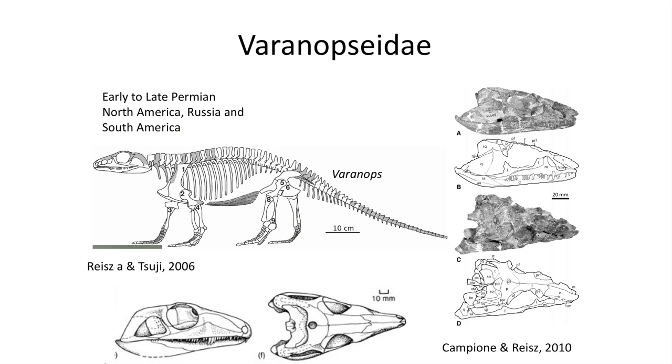Easy-to-digest fruits had yet to evolve during the Permian. The next group are the Varanopidae, which lived during the early and middle Permian period. They are found in North America, Russia, and South America, and feature narrower skulls and numerous sharp teeth.